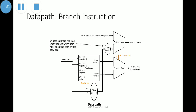In the branch instruction data path, we have a shift-left-two unit. No shift hardware is required — we simply connect the wires from input to output, each shifted left two bits.